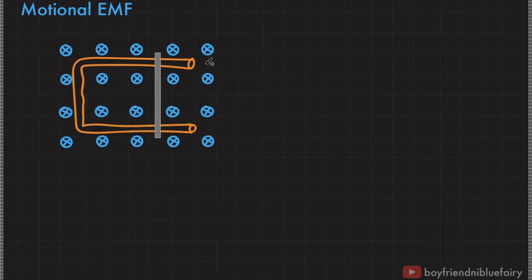On top of this C-shaped conductor is another conductor. It's actually a simple rod. This rod is movable and has a length L. The rod and the C-shaped conductor actually touch each other. So effectively, they form a closed conducting loop.